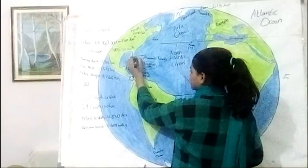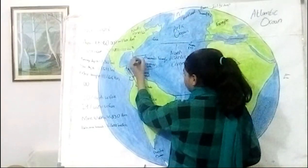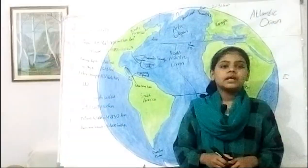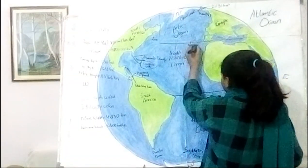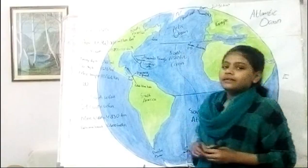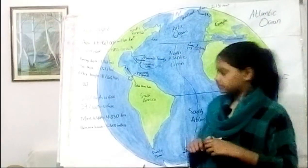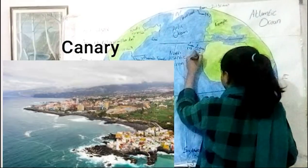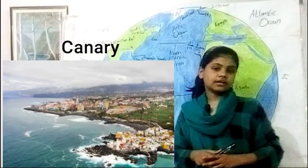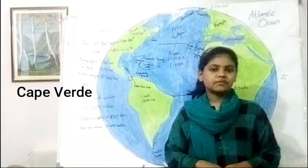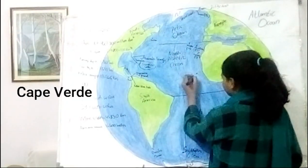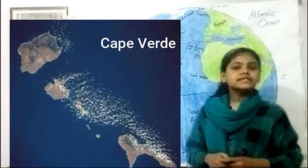Bermuda is an archipelago of seven main islands and above 170 additional islands and rocks. Madeira is a Portuguese island chain made up of four islands. The Canary Islands is a group of seven islands in the Atlantic Ocean. Cape Verde is a group of ten islands.